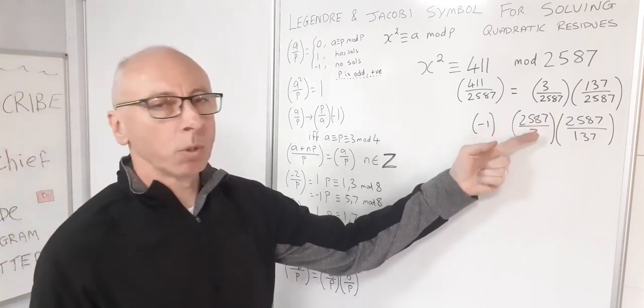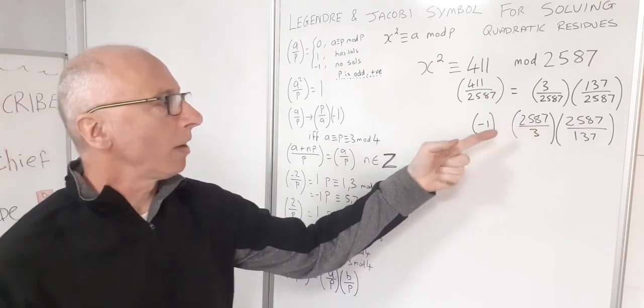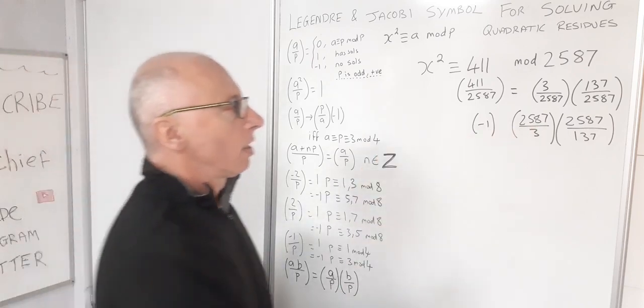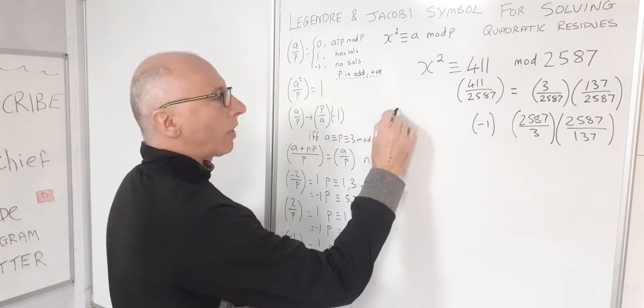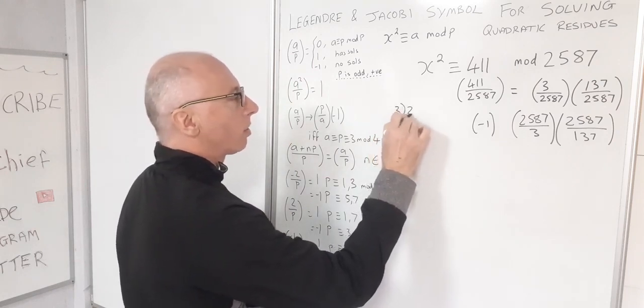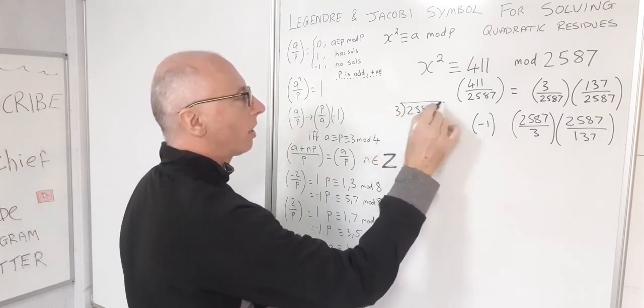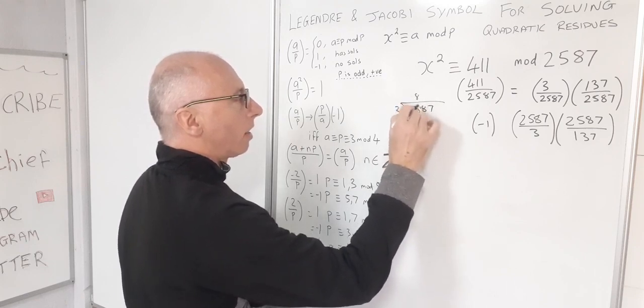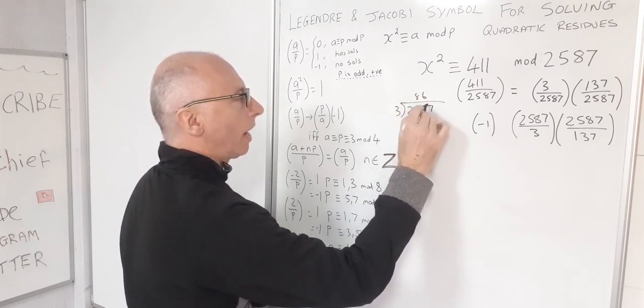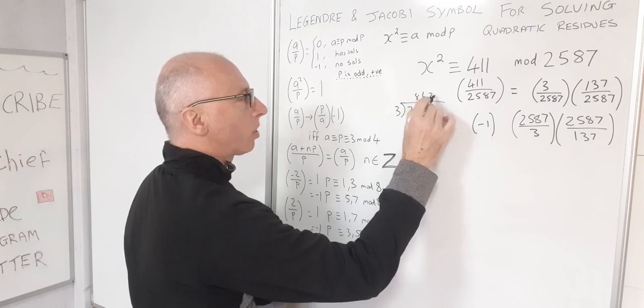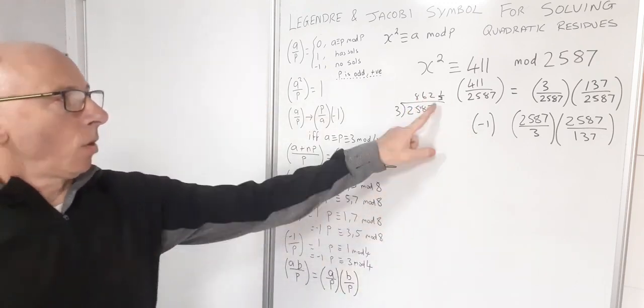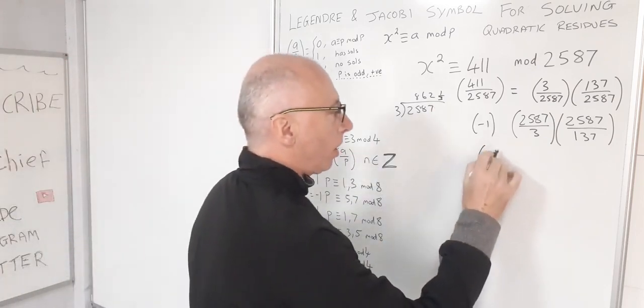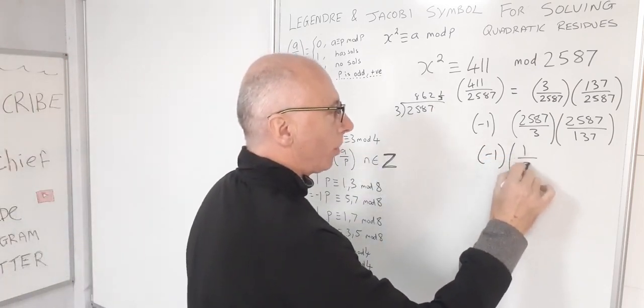Okay, so now let's just deduct multiples of 3 from 2587. So let's have a look what that would give us. So 2587 divided by 3. So 3s into 2, 5, 8, 7. So I've got 8, 6, and then 8s into 7 give you 2. So that gives you 2 and then 1 left over. So I've got 1 left here. So I've got a minus 1 and 1 over 3.